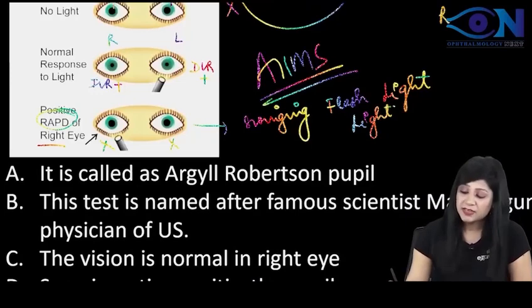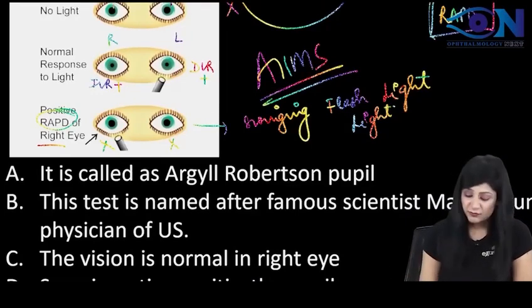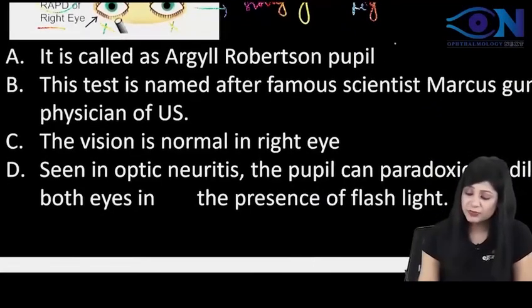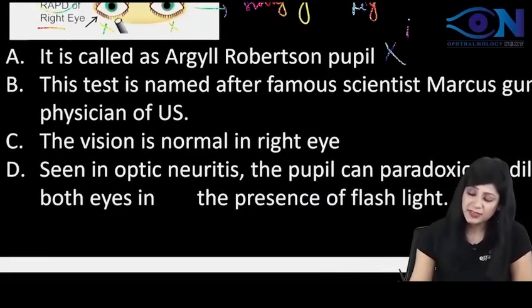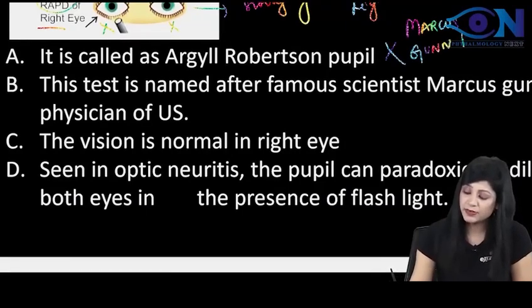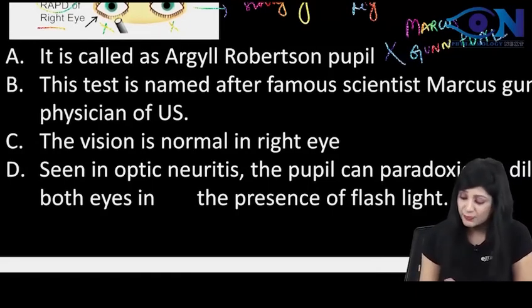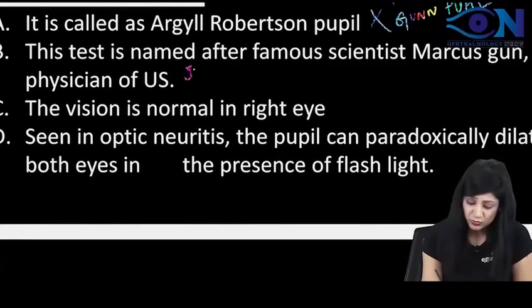RAPD means relative afferent pupillary defect. It is not called Argyll Robertson pupil. This is actually called the Marcus Gunn pupil, named after Marcus Gunn, the physician. This is true.